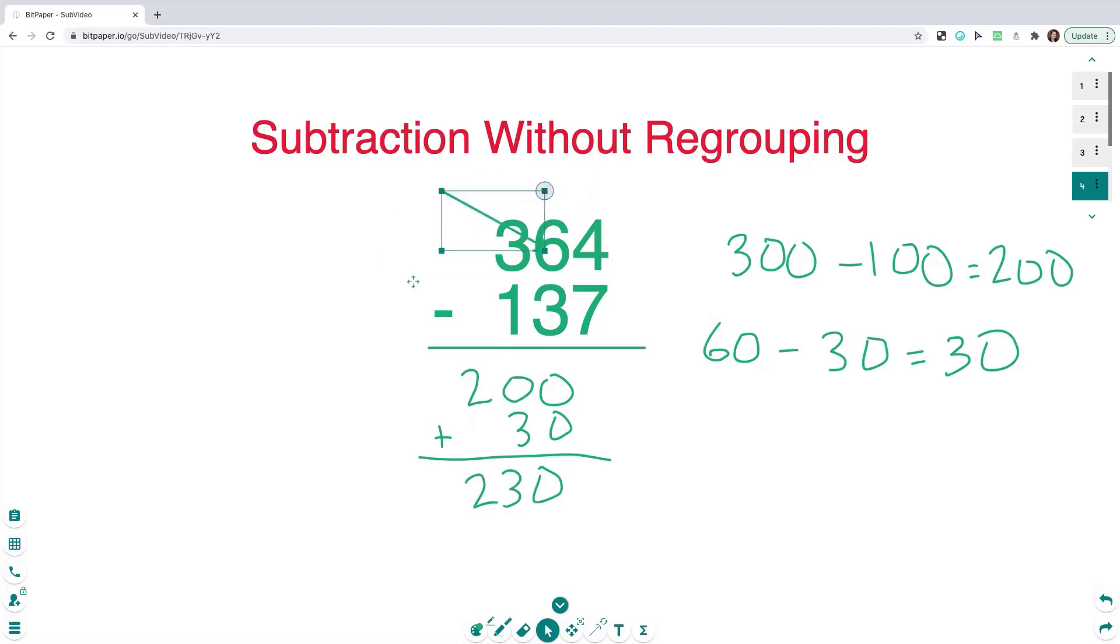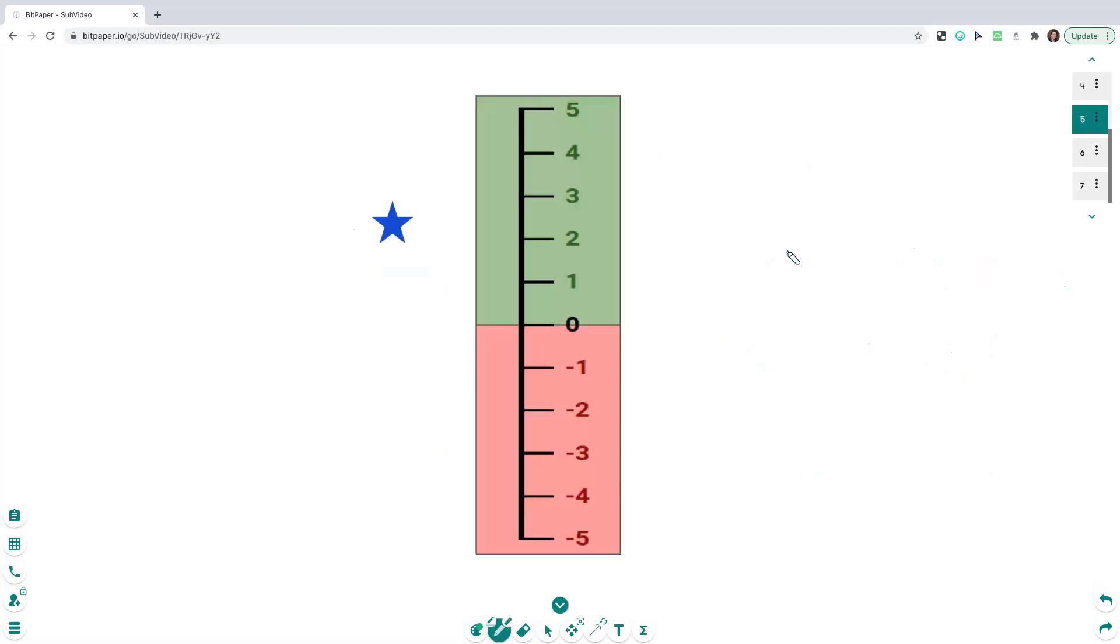So we have 4 minus 7. The difference between 4 and 7 is 3, but because 4 is smaller than 7, that is a negative 3. And I can demonstrate that on the number line, 4 minus 7 over here. So we're going to start on this vertical number line at positive 4, and we're going to go down 7 spots. 1, 2, 3, 4, 5, 6, 7. And we get to negative 3.